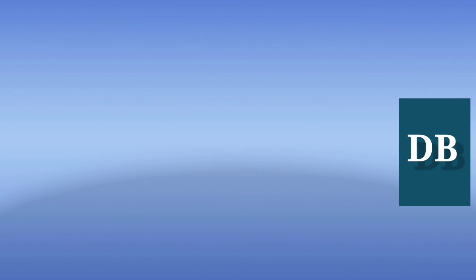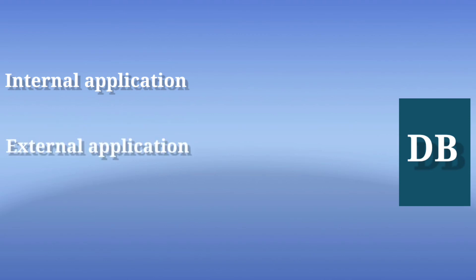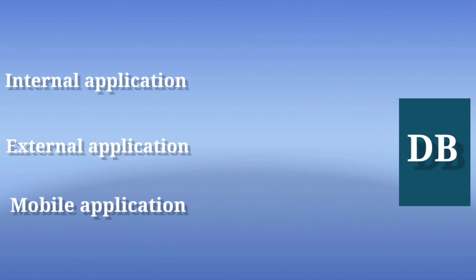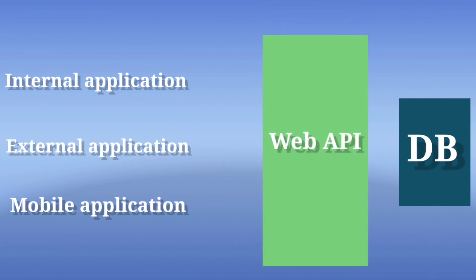As we are seeing, we have a database and we have three applications: an internal application, an external application, and some mobile application. These three applications want to access the database, but it is not a wise decision to allow these applications to access the data directly from the database. Instead, we can embed a Web API in between all these applications and our database, and allow access to data with the help of methods defined in Web API, instead of direct access to the database.